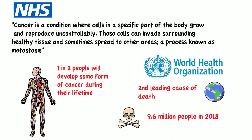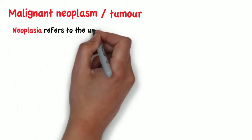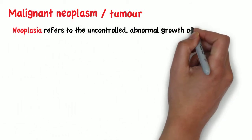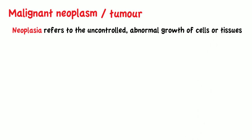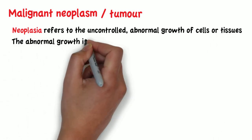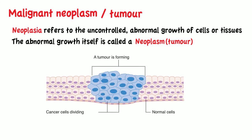The medical term for cancer is a malignant neoplasm or malignant tumor. A neoplasia refers to the uncontrolled abnormal growth of cells or tissues in the body, and the abnormal growth itself is called a neoplasm or a tumor.